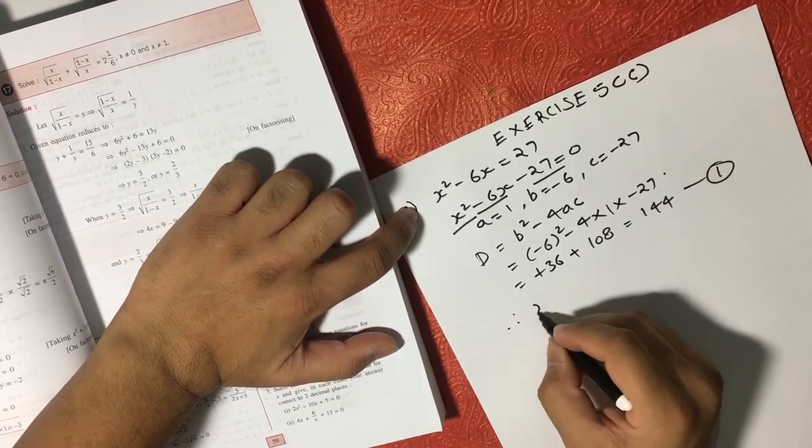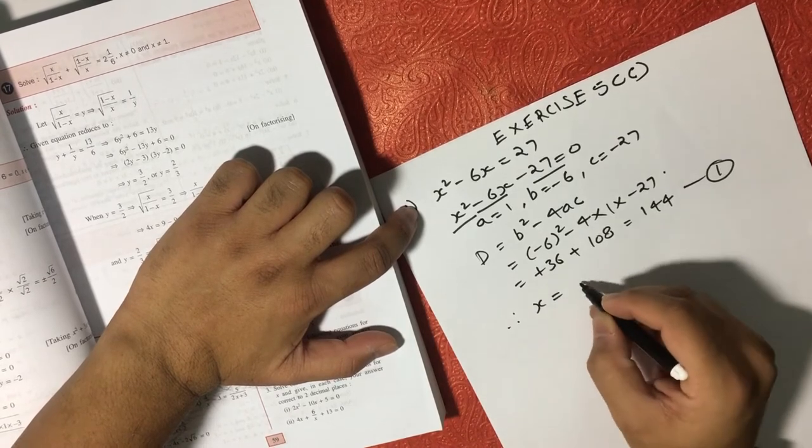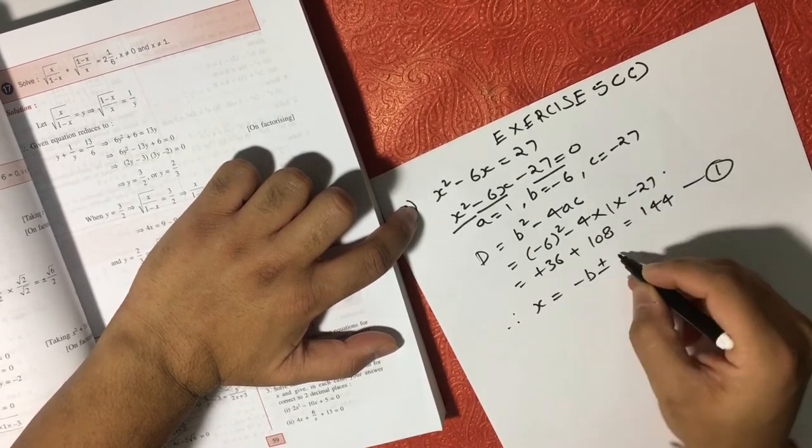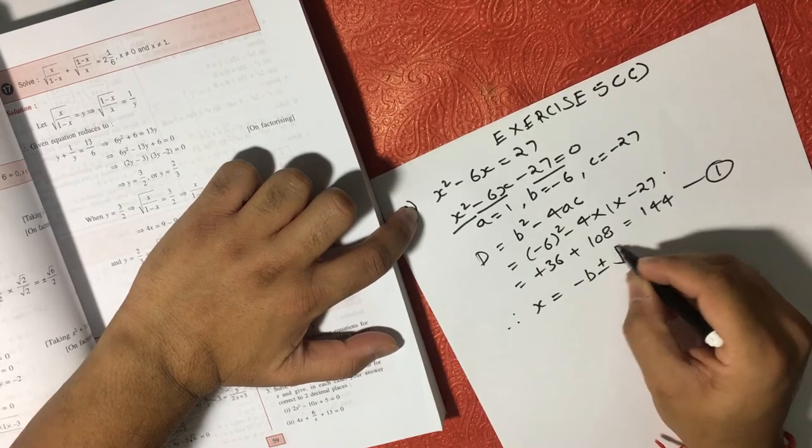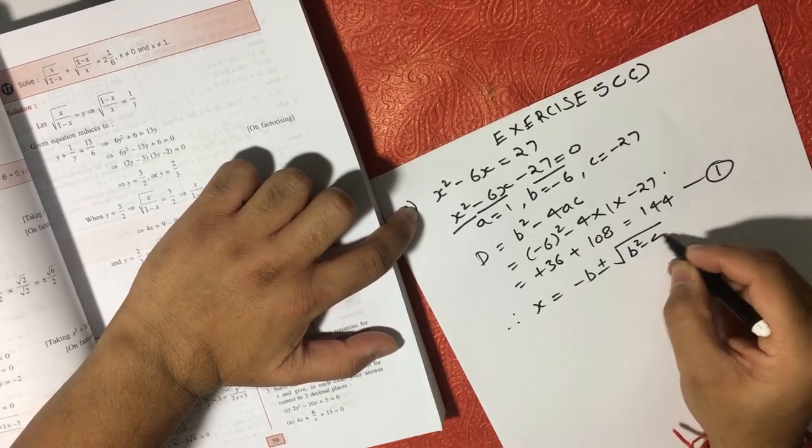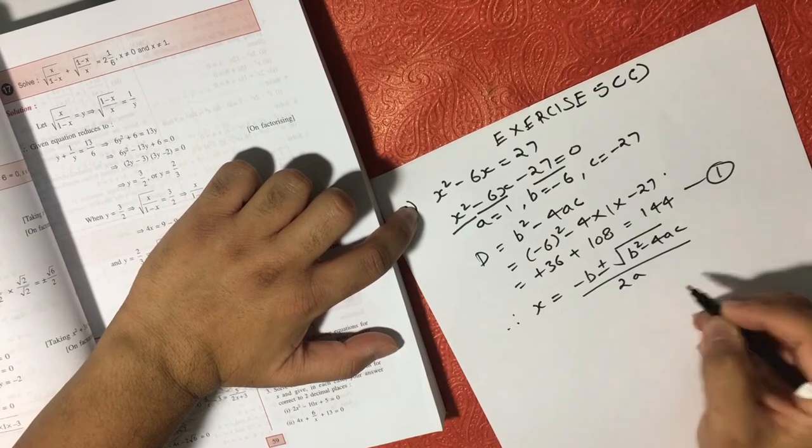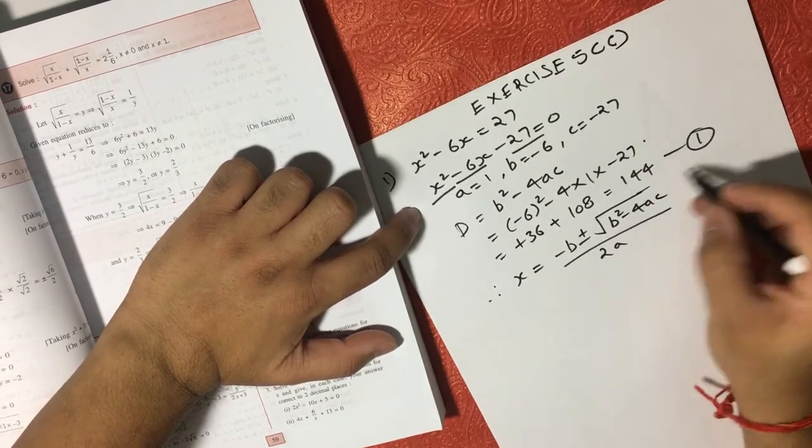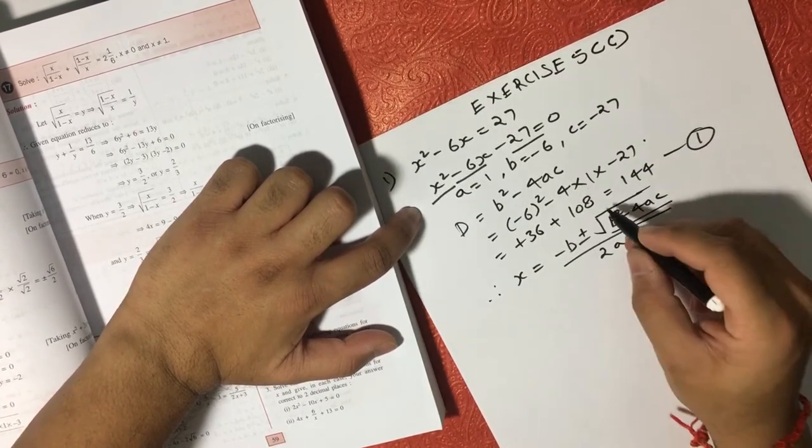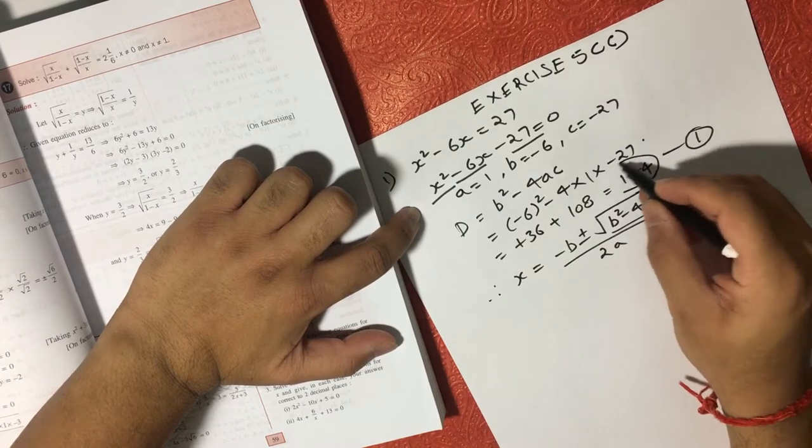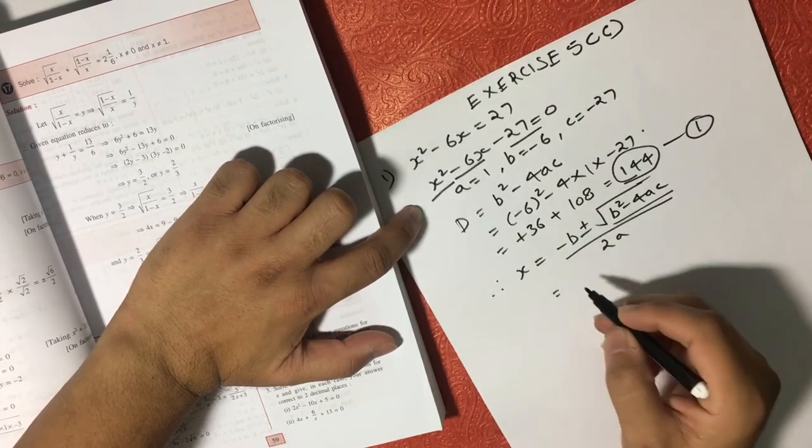Now we have another formula, x is equal to minus B plus minus square root of B square minus 4AC oblique 2A. From equation number 1, we know B square minus 4AC is 144 and rest we know.